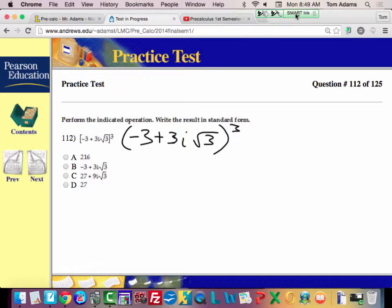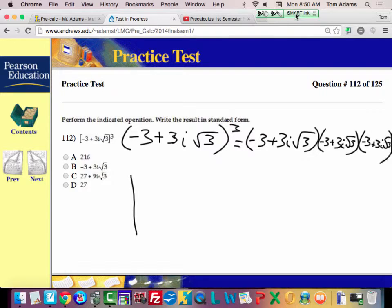We just got to multiply it out three times. So this means I'm going to say negative 3 plus 3i times negative 3 plus 3i square root of 3 times negative 3 plus 3i square root of 3.